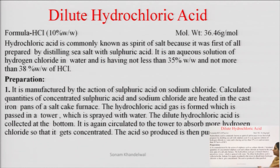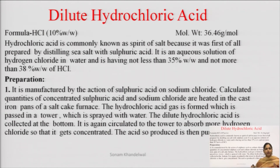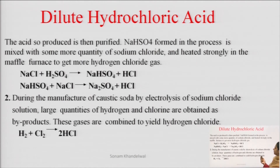Isko preparation kaise karte hain? Preparation karne ke liye, jo sulfuric acid hai, usko hum react karate hain sodium chloride ke saath mein. Calculated quantities lenge sulfuric acid aur sodium chloride ki, aur cast iron pans hote hain — salt cake furnace — jo hum commercially prepare karate hain. Wahan pe hum isko heat karenge. Heat karne ke baad jo humari hydrochloric acid banegi, usko hum ek tower mein pass karenge. Us tower mein hum usse spray karate hain water ke saath mein — toh jo gas bani hai woh condense hoke humari hydrochloric acid banegi. Isko hum phir bottom mein collect karenge. Phir se isko circulate karenge to the tower, jisse ki zyada hydrogen chloride concentrate ho jaye. Phir is tarike se jo acid humari banegi, isko hum purify karte hain.